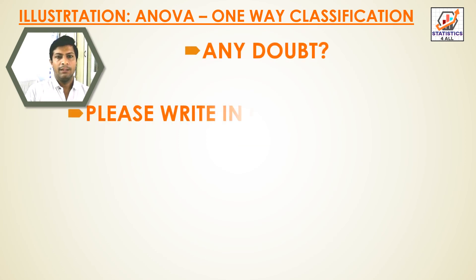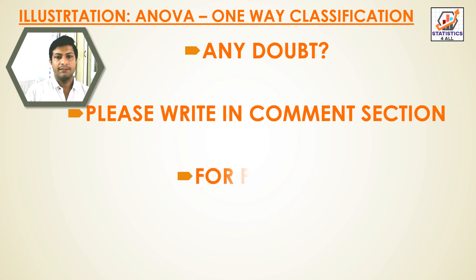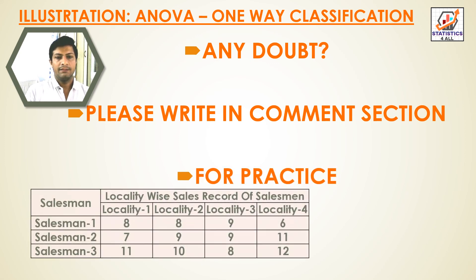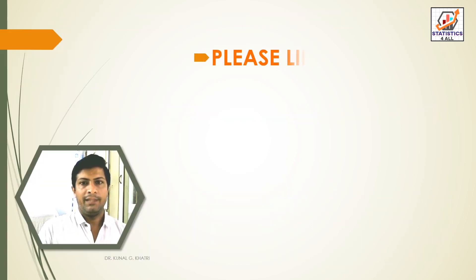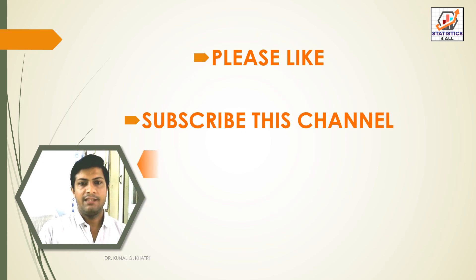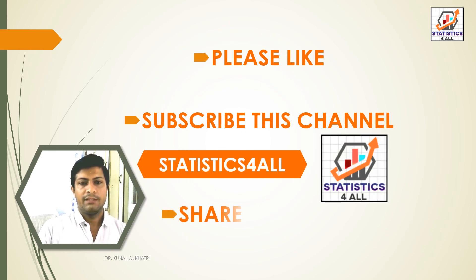For any doubts, please write in the comment section. For practice, a new problem is given: Salesman 1, 2, 3 with locality-wise sales for localities 1–4. Data: 8, 8, 9, 6 / 7, 9, 9, 1 / 7, 9, 9, 11 / 11, 10, 8, 12. Test the significance of difference between three salesmen using one-way ANOVA. Please like, subscribe, share, and thanks for watching.